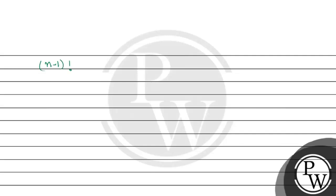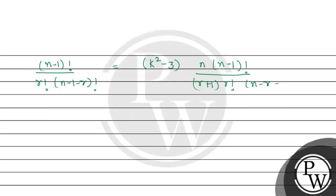Further, we can write: (n-1)! upon r! times (n-1-r)!, equals k squared minus 3, times (n-1)! upon (r+1) times r! times (n-r-1)!. Now the (n-1)!, r!, and (n-r-1)! terms cancel. What remains is: n upon (r+1), multiplied by k squared minus 3, equals 1.